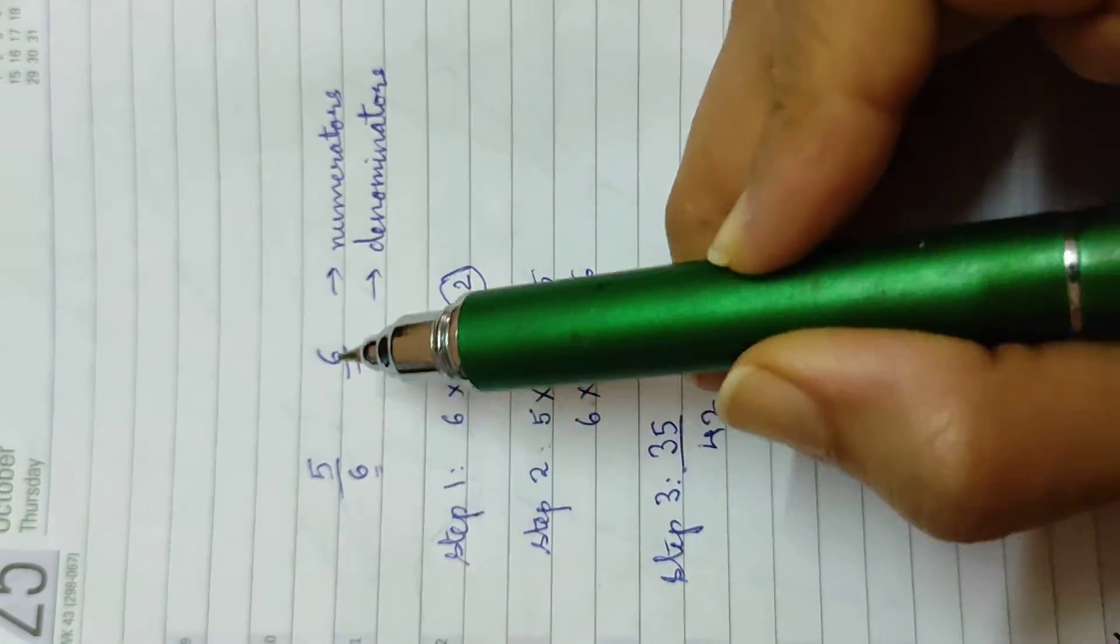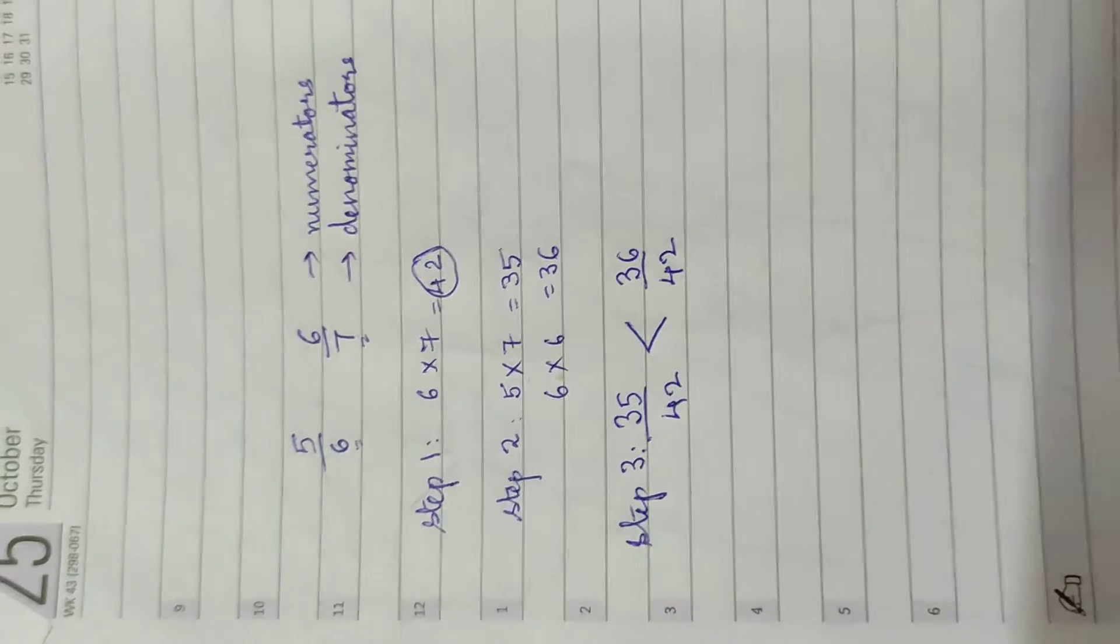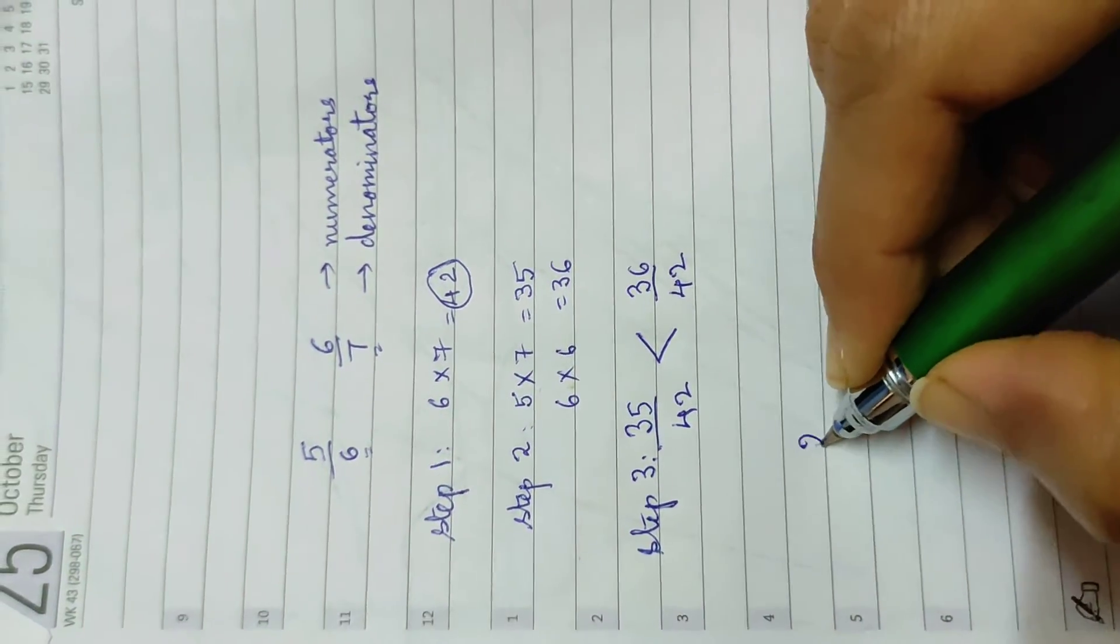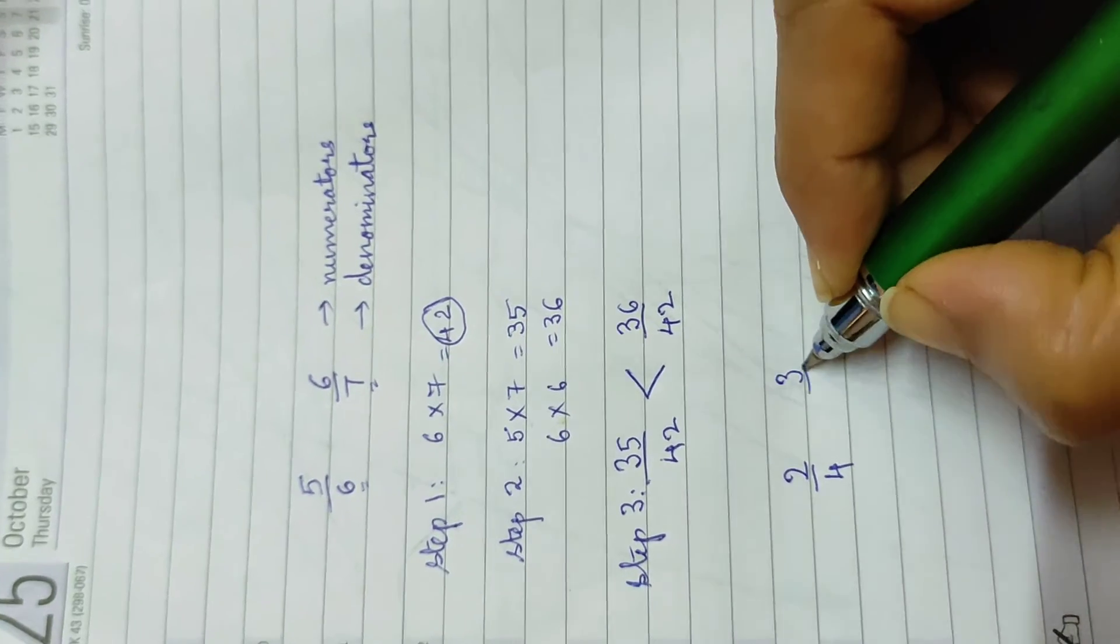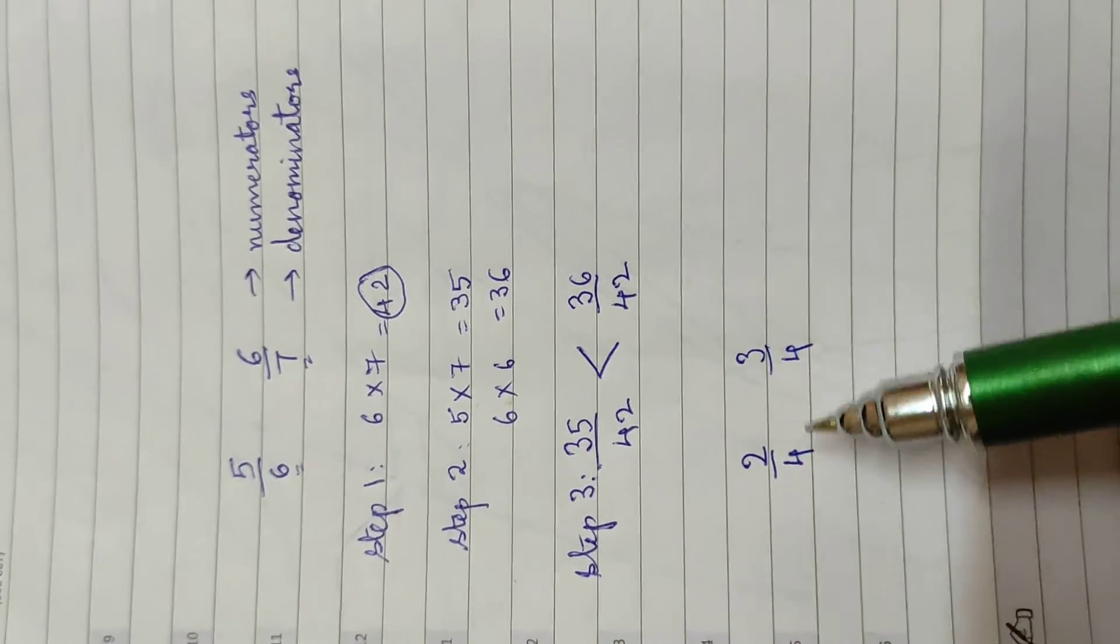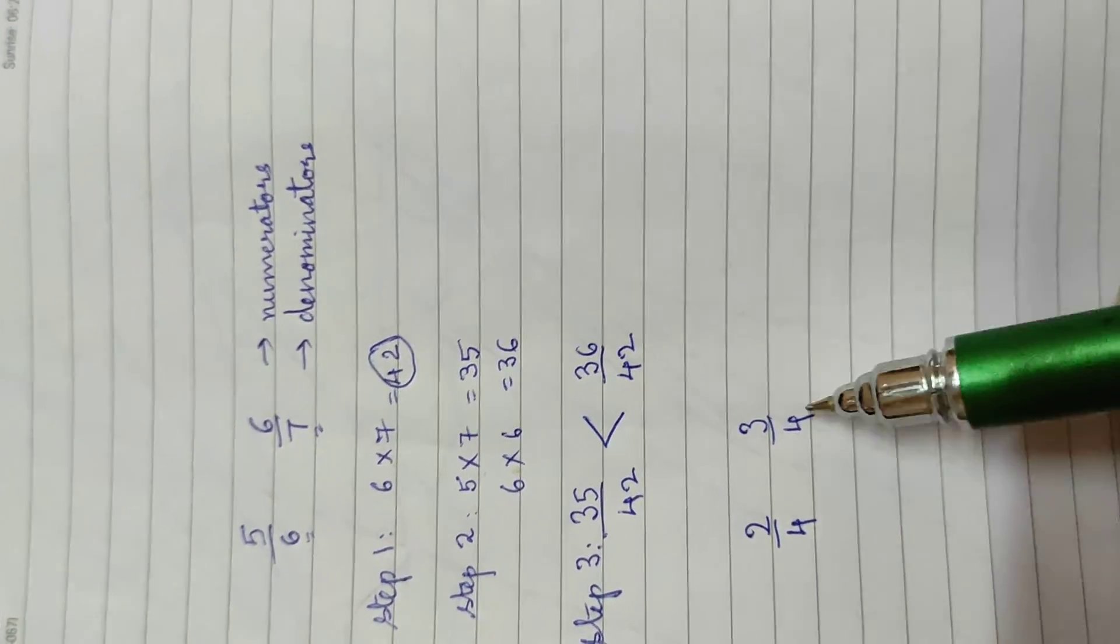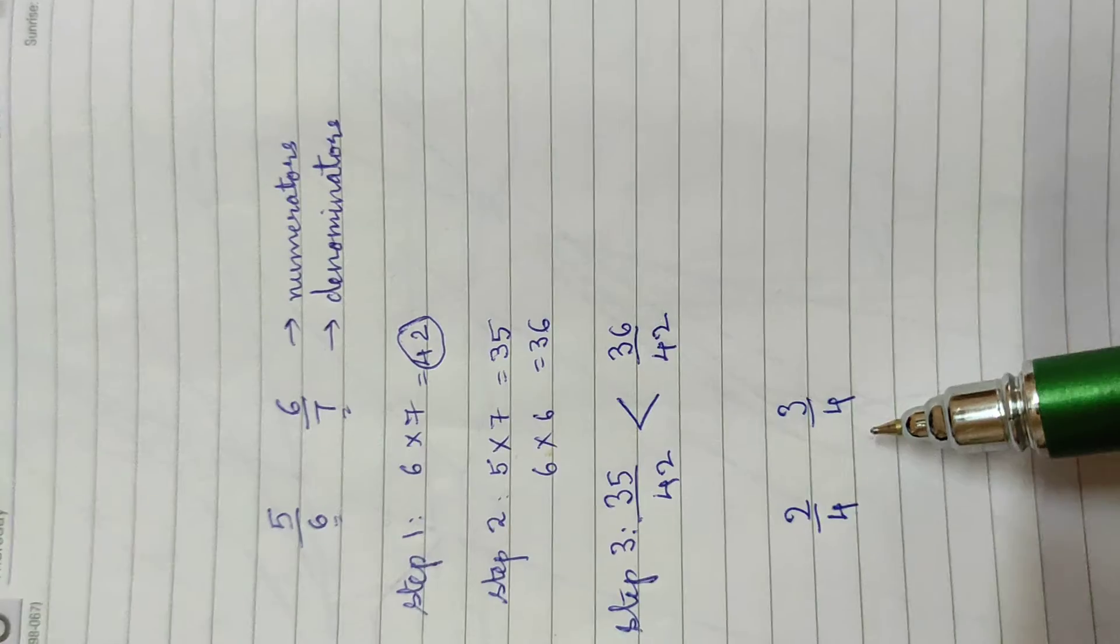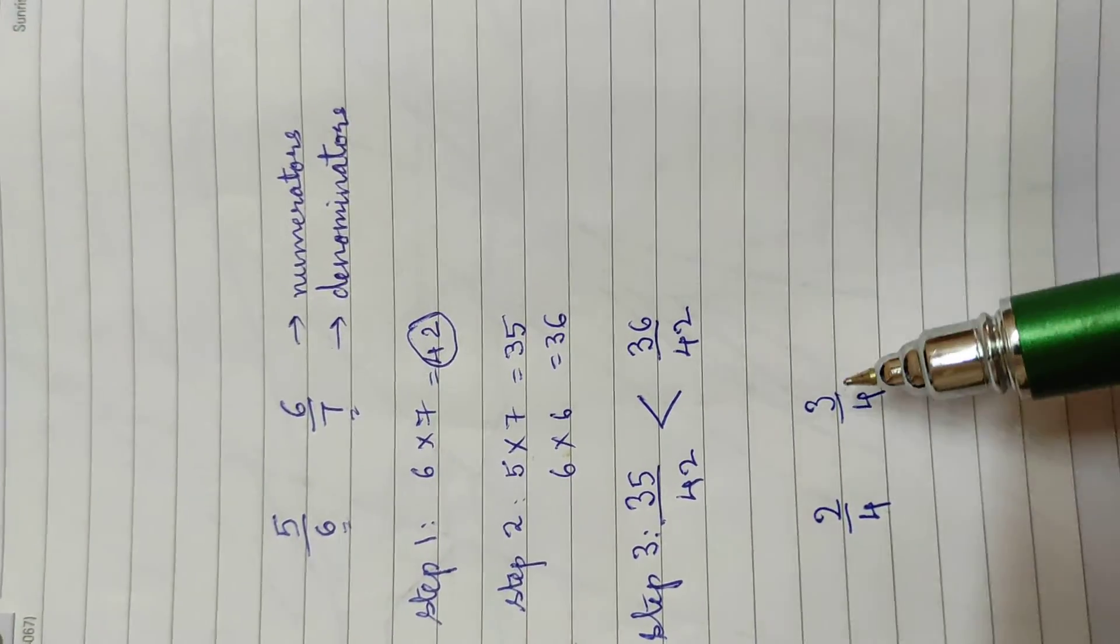And if I had to compare something like 2 by 4 and 3 by 4, it's so much simpler because I know the object or whatever the thing is, cake has been cut into 4 pieces in both the fractions.